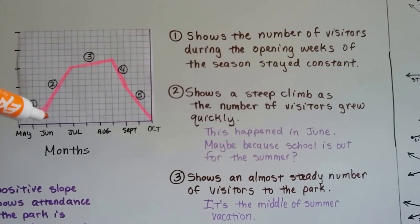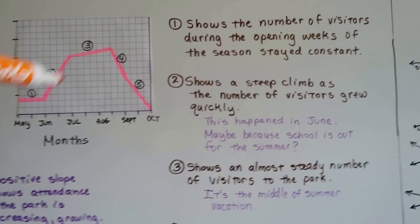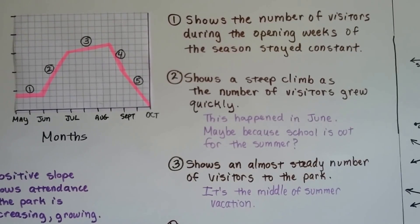Then section 2 is showing a steep climb as the number of visitors grew quickly. Now why would that happen? This happened in June. Maybe because school is out for the summer?